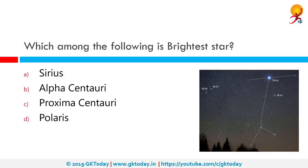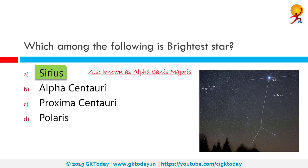Which among the following is the brightest star? The correct answer is Sirius. Sirius is the brightest star in the sky, also known as the dog star or more officially Alpha Canis Majoris, for its position in the constellation Canis Major. Sirius is a binary star dominated by a luminous main sequence star, which is Sirius A.